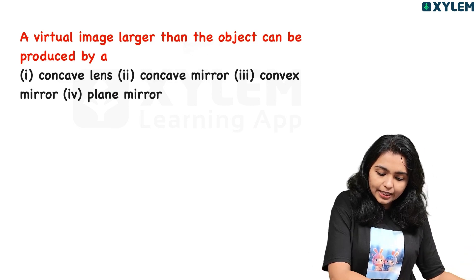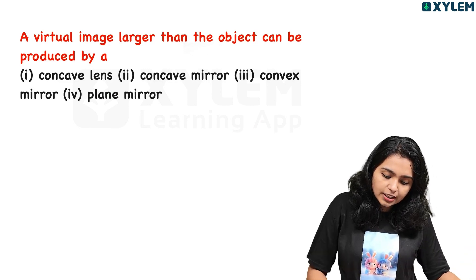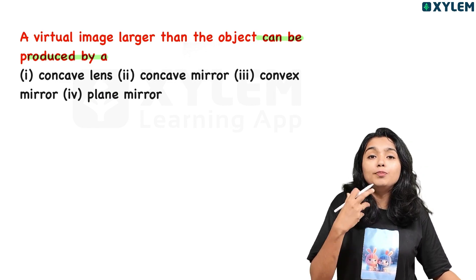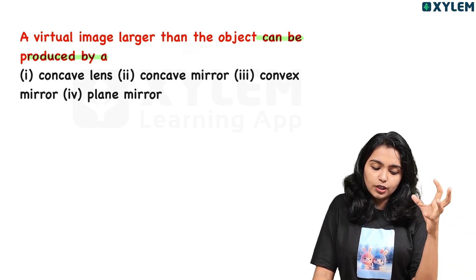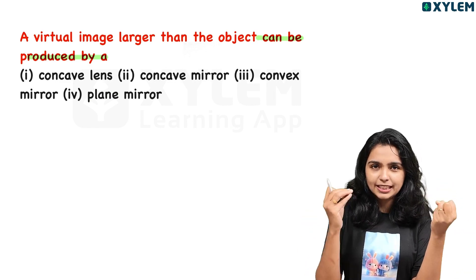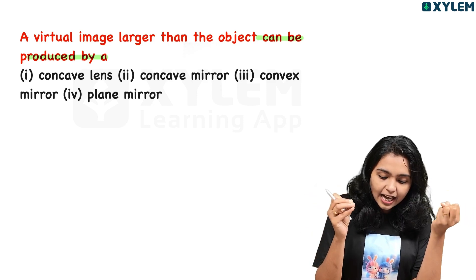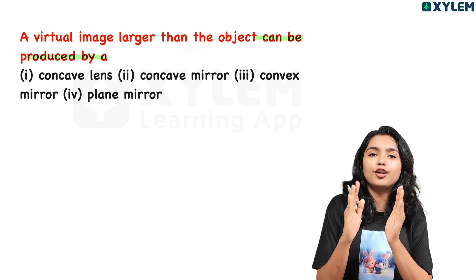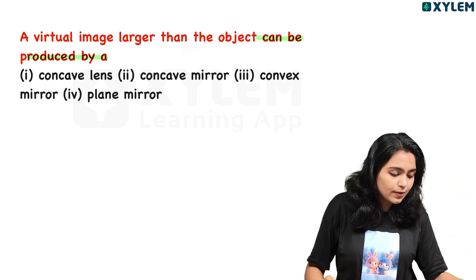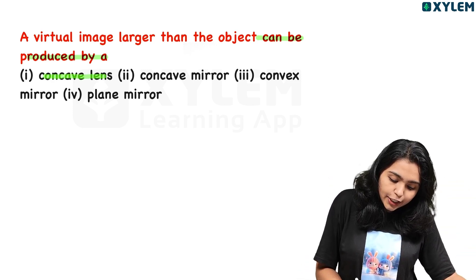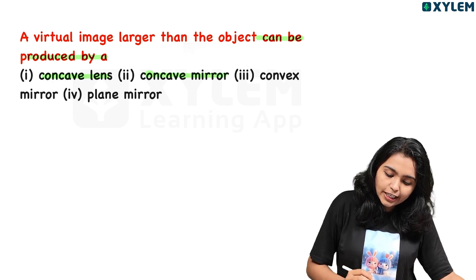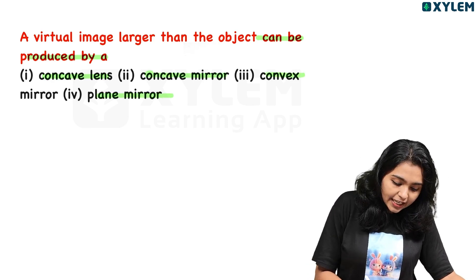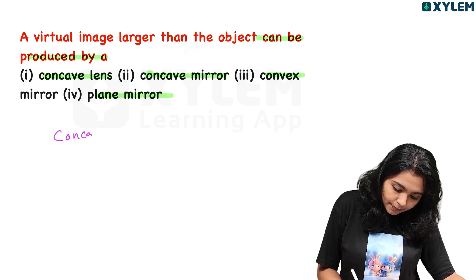A virtual image larger than the object can be produced by which optical element? The options are concave lens, concave mirror, convex mirror, and plane mirror. The answer is concave mirror.